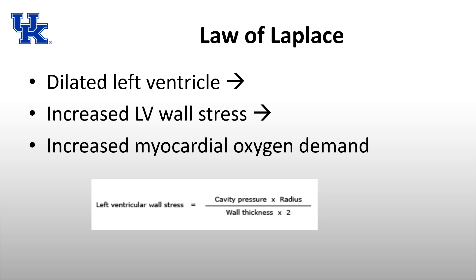Why is the increased left ventricular radius bad? It goes back to the law of Laplace. The law of Laplace applies to both aortic stenosis and aortic insufficiency. In aortic insufficiency you have a dilated left ventricle. Wall stress is directly proportional to both cavity pressure and radius. If the cavity pressure or radius increases, LV wall stress increases, which in turn increases myocardial oxygen demand. In aortic stenosis there's increased cavity pressure, and in aortic insufficiency there's increased radius — both result in elevated LV wall stress.